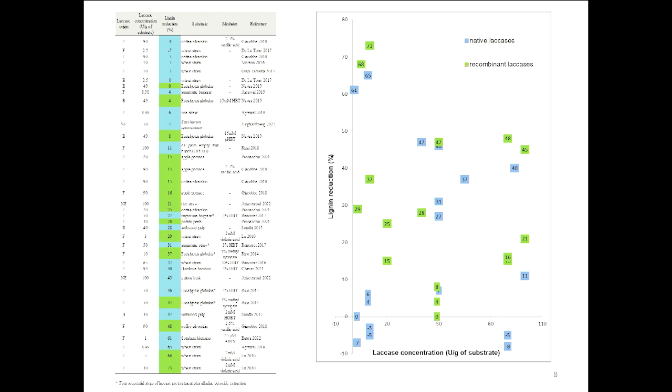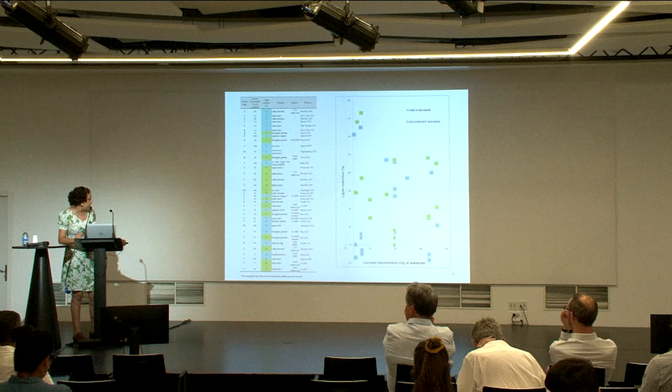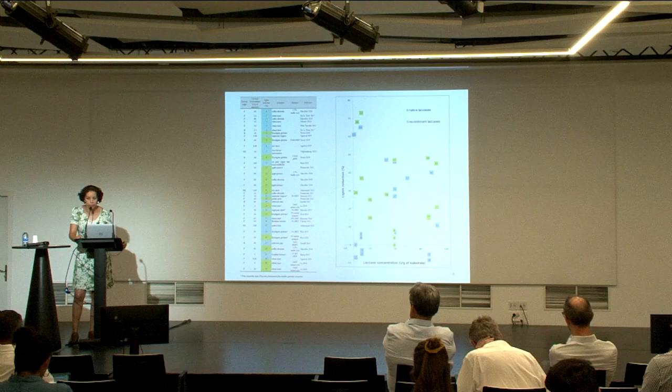Another important point is the use of mediators. As you can see, the works that obtain higher reductions almost all utilize mediators. Mediators have a smaller size than the enzyme, so they can go deeper into the lignocellulose matrix. If we use the laccase alone, it might not enter all parts of the matrix, and thus the degradation is lower.